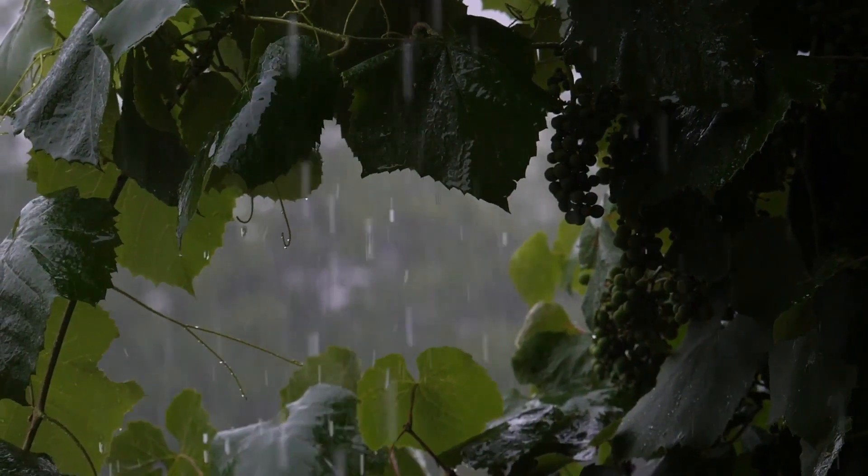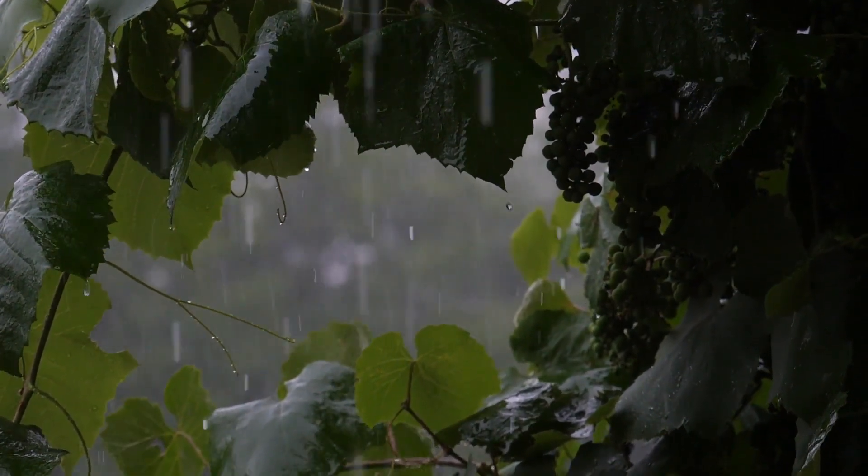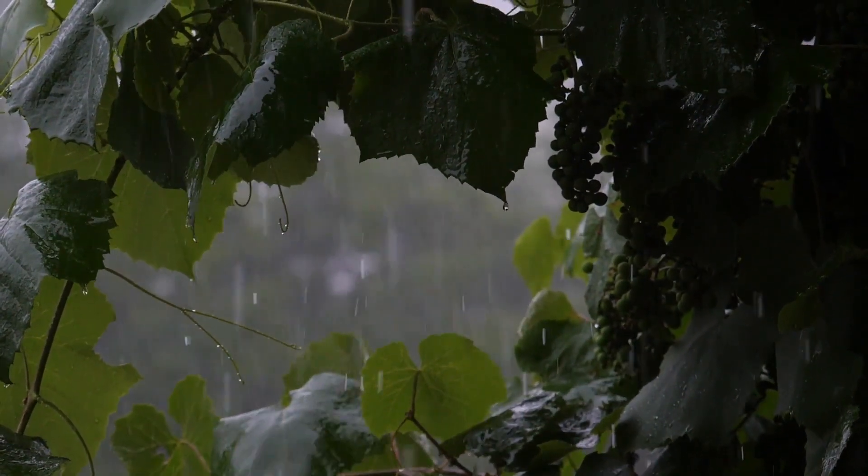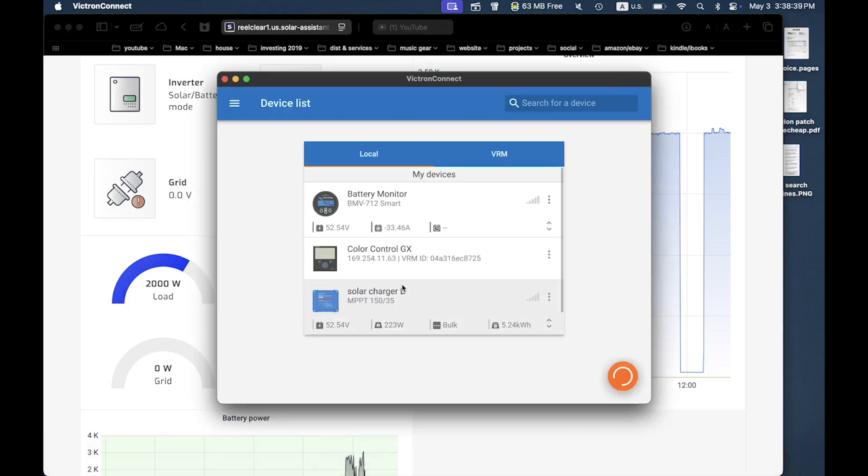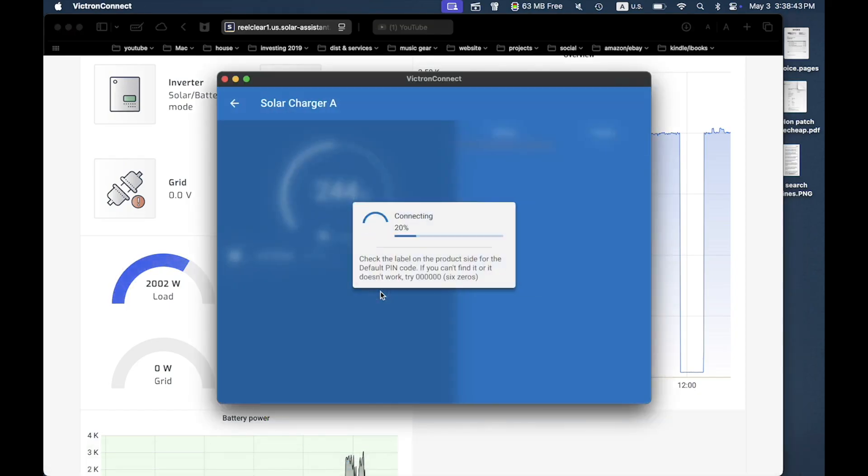We're about an hour later, and it is raining outside right now. It's still not super dark like it gets sometimes. The overall load on my inverter is still about 2,000 watts, but you'll see most of it's coming right now from the battery. I'm pulling about 1,700 watts off the battery. Let's go look at the Victron chargers and see how much solar we're getting.